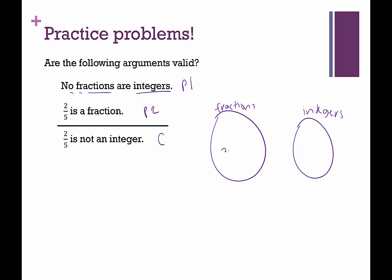Then it says two-fifths is a fraction. So we're going to put two-fifths here in our fraction set. Can we conclude that two-fifths is not an integer? Yep, it is definitely not an integer because it's in our very separate fractions set. So this argument is valid. These have been examples of looking at the validity of arguments using Euler diagrams. Thank you for stopping by.